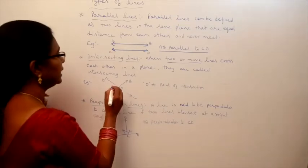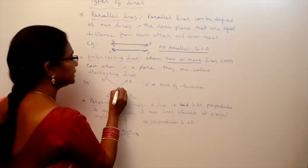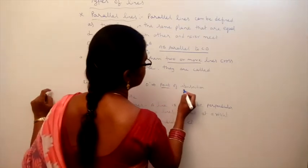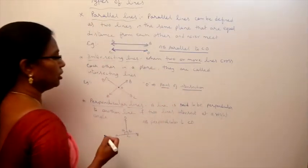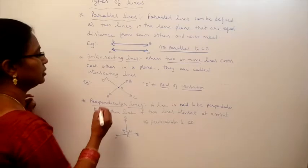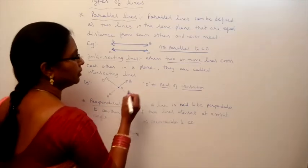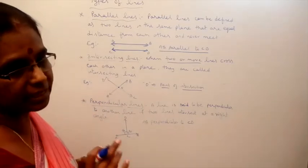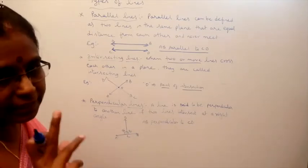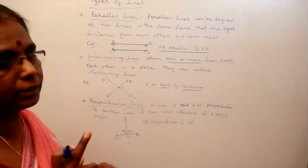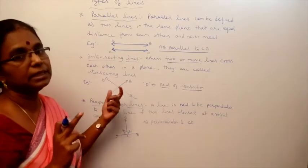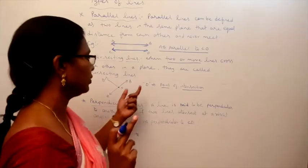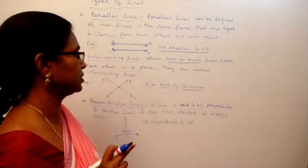They meet each other at O. What do we call that intersecting point? It is called the point of intersection. O is called the point of intersection. When two lines intersect at one point, those are called intersecting lines, and that meeting point is called the point of intersection.